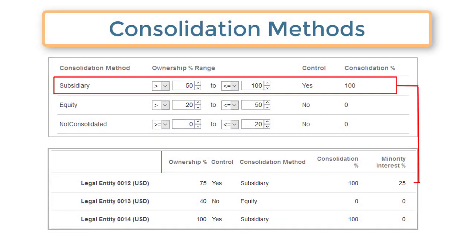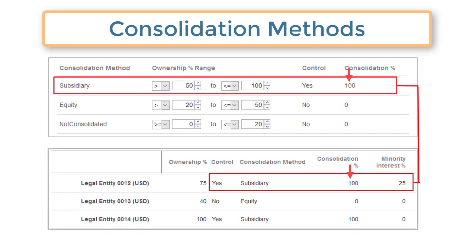For example, you can configure a consolidation method that specifies children owned between 50% and 100% are consolidated to the parent at 100%. Consolidation methods also set the control flag for the entity. The control flag indicates whether the parent has a controlling interest in the entity. If the control flag is yes and the entity is owned less than 100%, a minority interest percentage is calculated. The consolidation method, consolidation percentage, and minority interest are used in calculations during consolidation, for example, equity adjustments and intercompany eliminations.